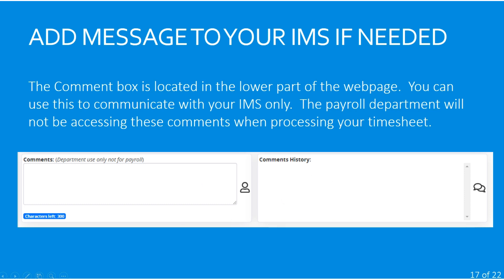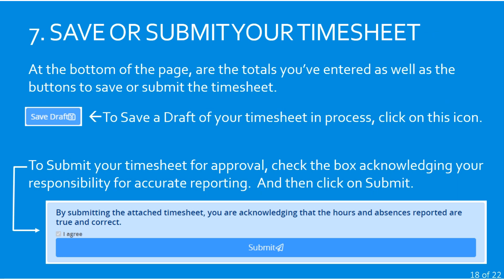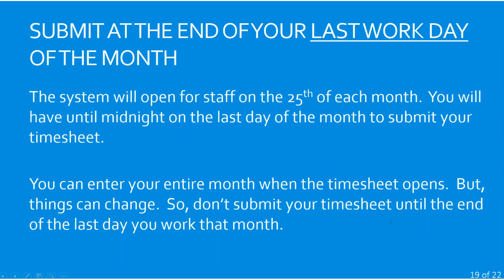When the timesheet is returned to you, comments from your manager will appear in that box, creating a history of dialogue. At the bottom of the page there's an icon to save the draft — you can save and review it one more time before submitting. For example, if the 25th arrives and you enter the rest of the month but aren't ready to submit, you can save the draft. Once you're ready to submit, check the box that acknowledges your responsibility for accurate reporting, then click the large Submit bar.